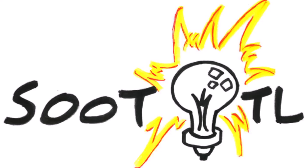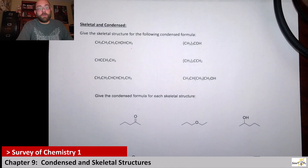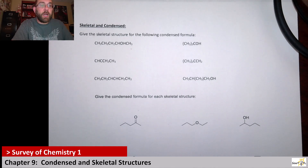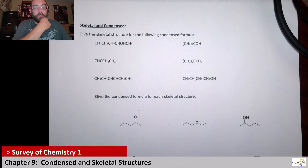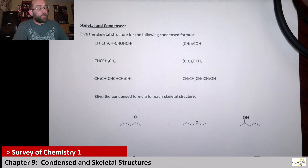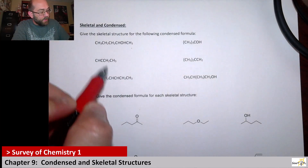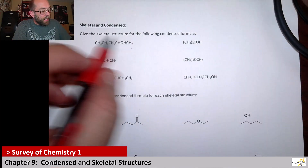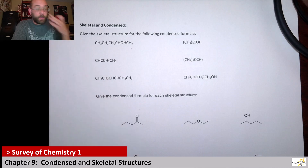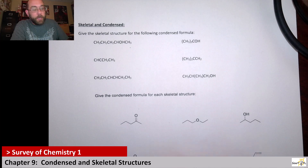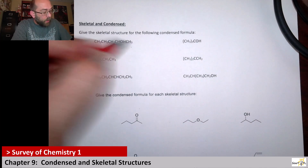Hello surveyors, this is going to act as our second practice video for chapter nine. We're going to look at the difference between skeletal and condensed structures. I've got about six of each type. The first one wants us to take condensed structures and write a skeletal structure — that's kind of the easier route. What you can do is read it from left to right.